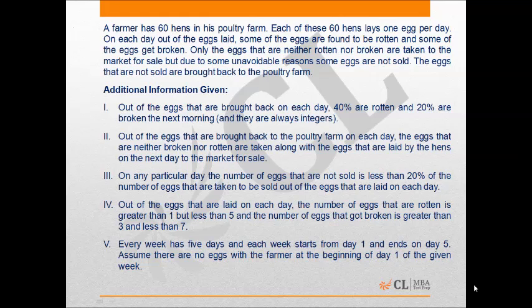A farmer has 60 hens in his poultry farm. Each of these 60 hens lays 1 egg per day. On each day, out of the eggs laid, some are found to be rotten and some get broken. Only the eggs that are neither rotten nor broken are taken to the market for sale, but due to some unavoidable reasons, some eggs are not sold.